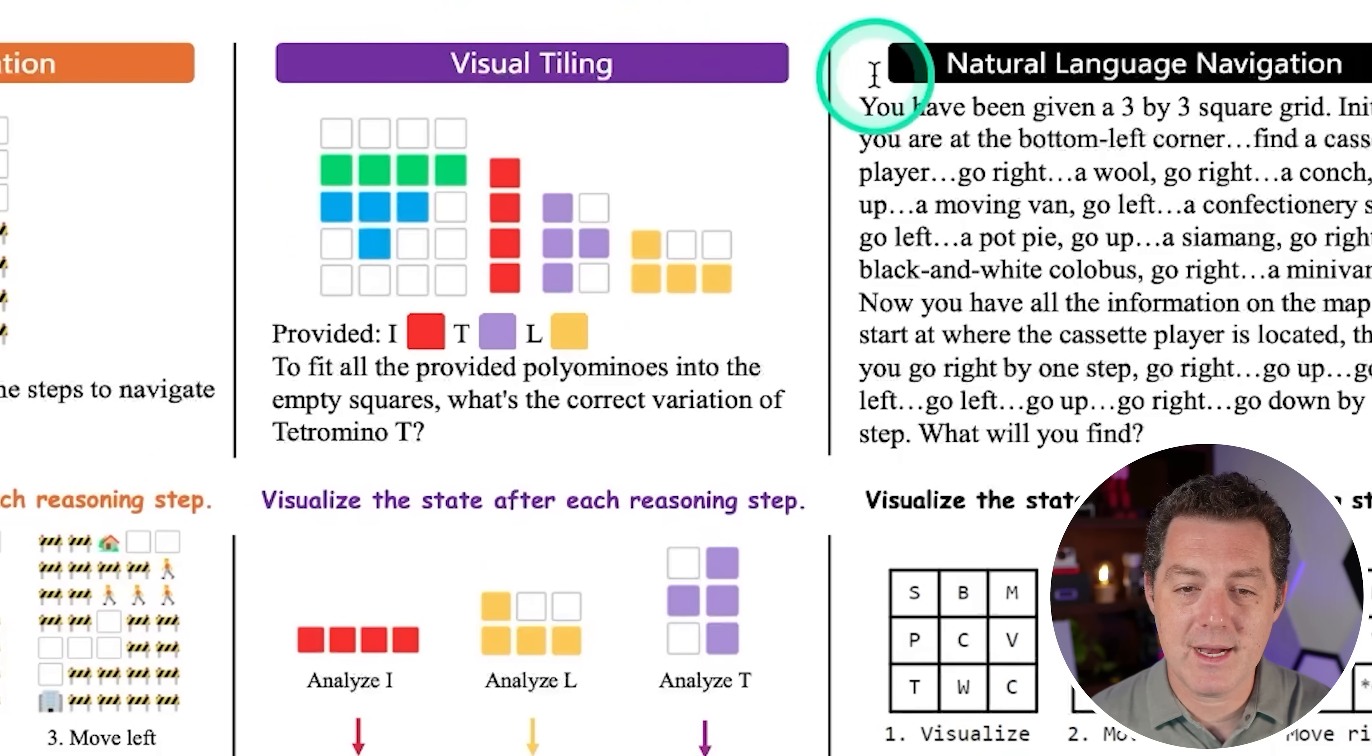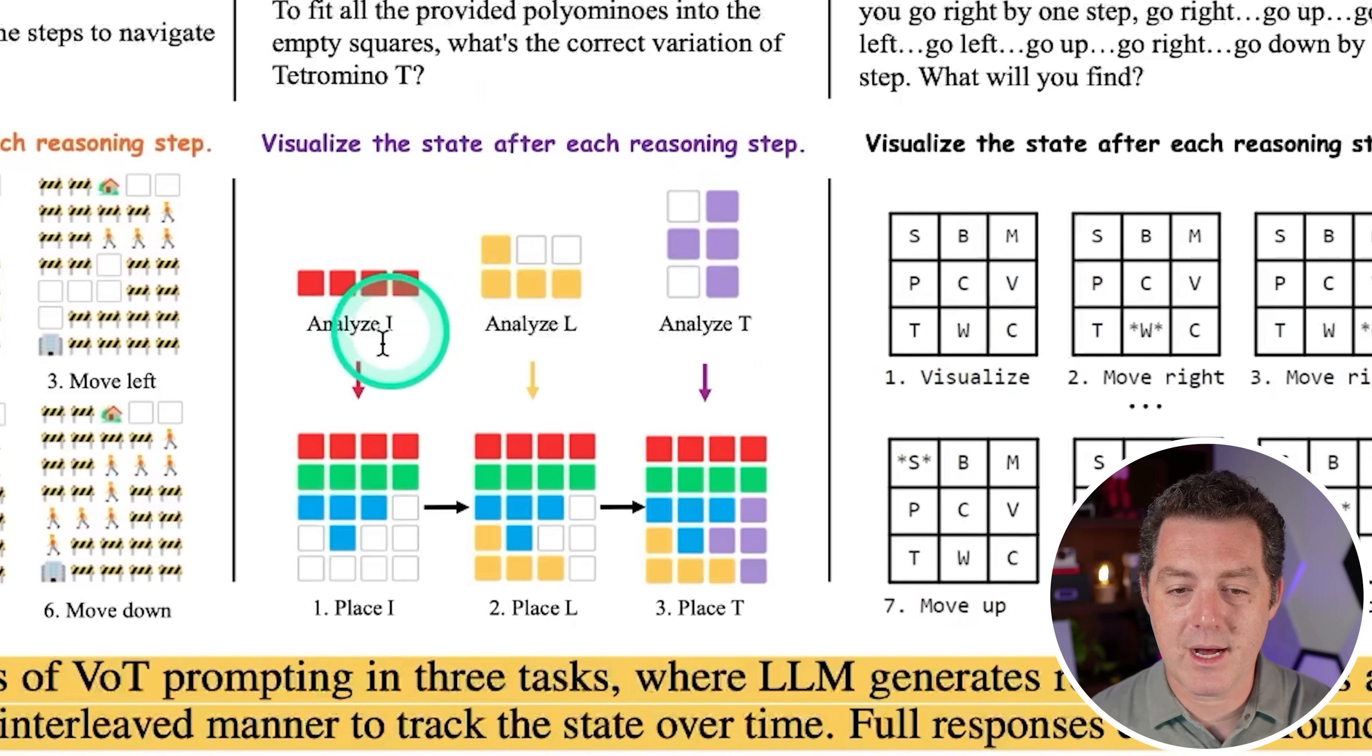Same with visual tiling. And what we're doing is we provide it with this grid and three different objects. So one by four, this is essentially Tetris objects. And we say, can you fit all of them into this grid? And so it says, OK, well, let's look at I. Where does that go? Then let's look at L. Where does that go? And then let's look at T. Where does that go? And then it is able to accomplish that and get them all in there.